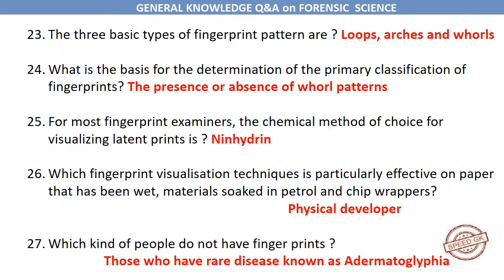The three basic types of fingerprint pattern are Loops, Arches and Whorls. What is the basis for the determination of the primary classification of fingerprints? The presence or absence of whorl patterns. For most fingerprint examiners, the chemical method of choice for visualizing latent prints is Ninhydrin. Which fingerprint visualization technique is particularly effective on paper that has been wet, materials soaked in petrol and chip wrappers?